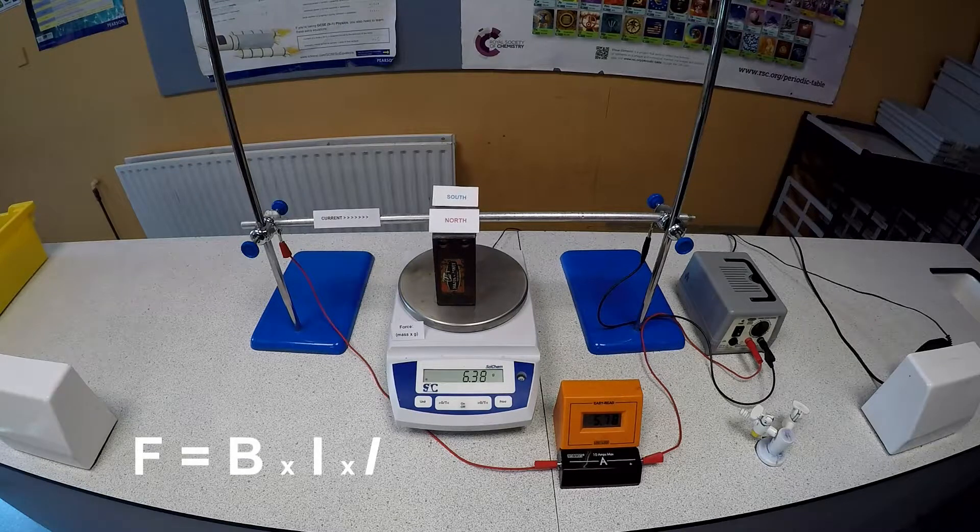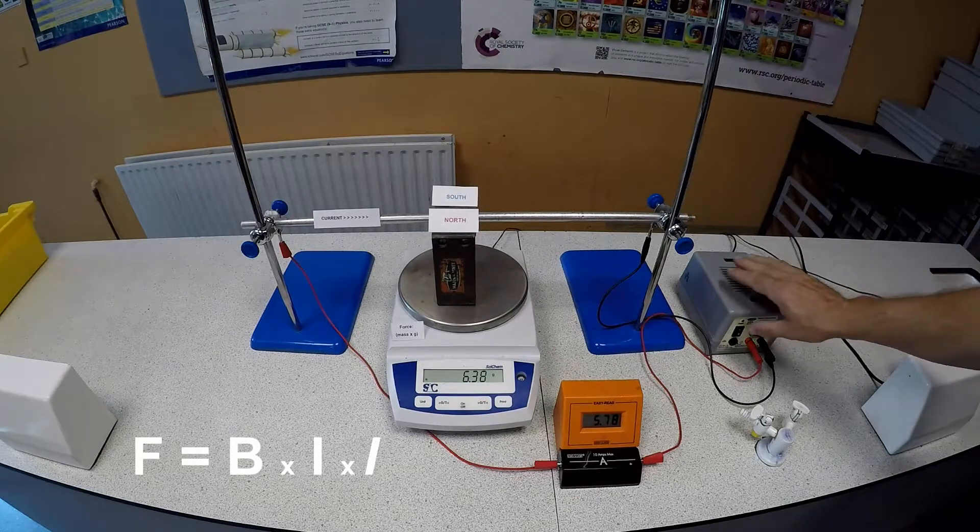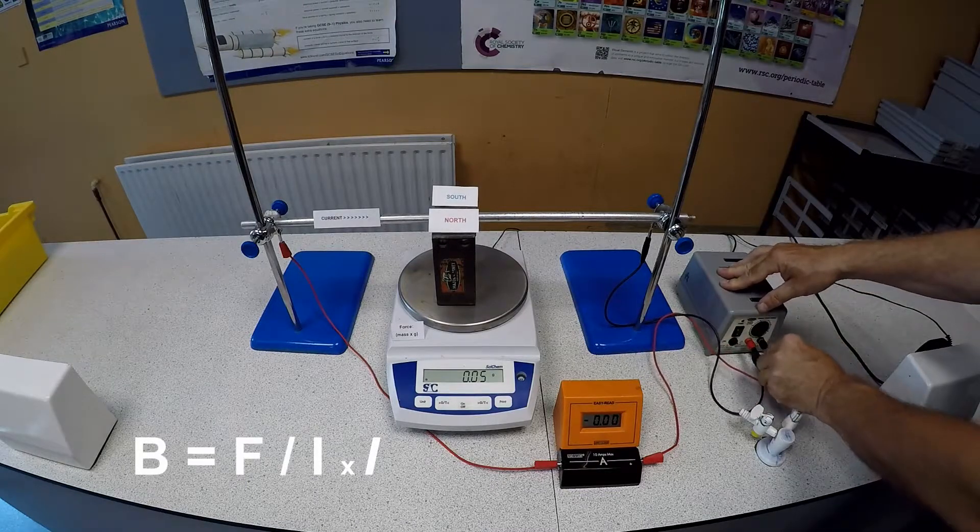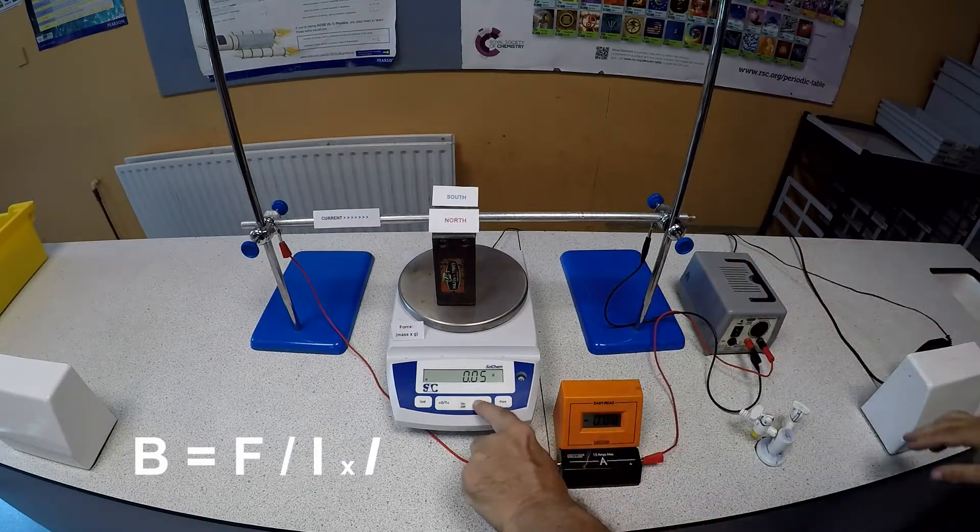Converting everything to SI units, that's grams to kilograms, centimeters to meters, and using the form F equals BIL, or rearranging the form F equals BIL,